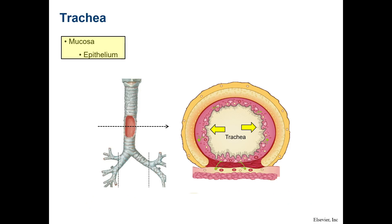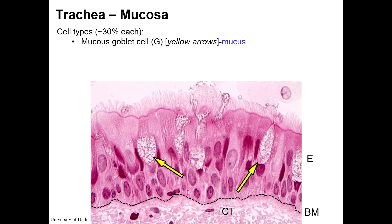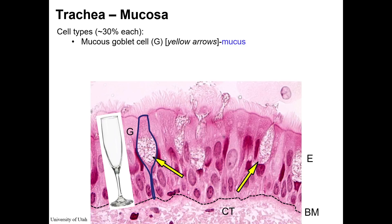Numerous types of cells can be identified in tracheal mucosa, but there are three major cell types, each comprising around 30%. Mucous goblet cells, shown here, are non-ciliated cells that are in contact with the basal lamina and the lumen. They produce mucins, which are released by exocytosis into the lumen and form part of the protective mucus gel layer that lines airways. They are readily identifiable by their shape and contents.